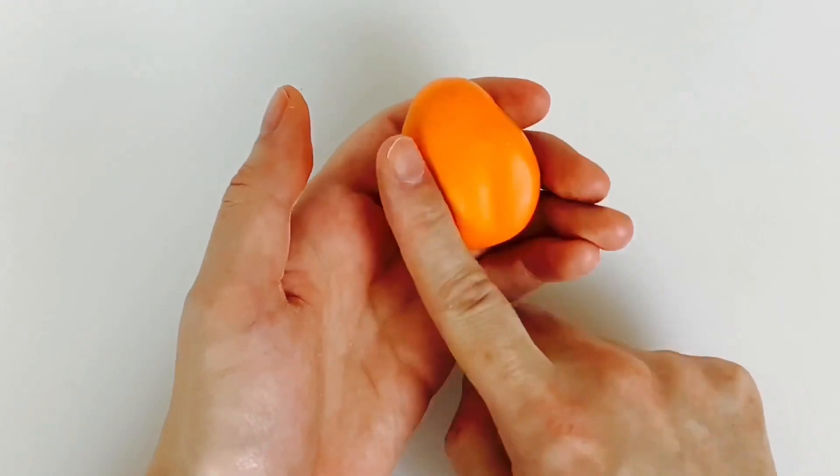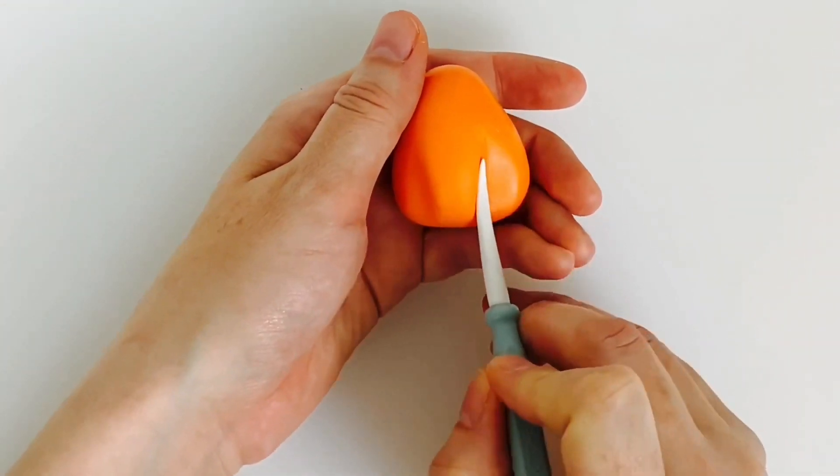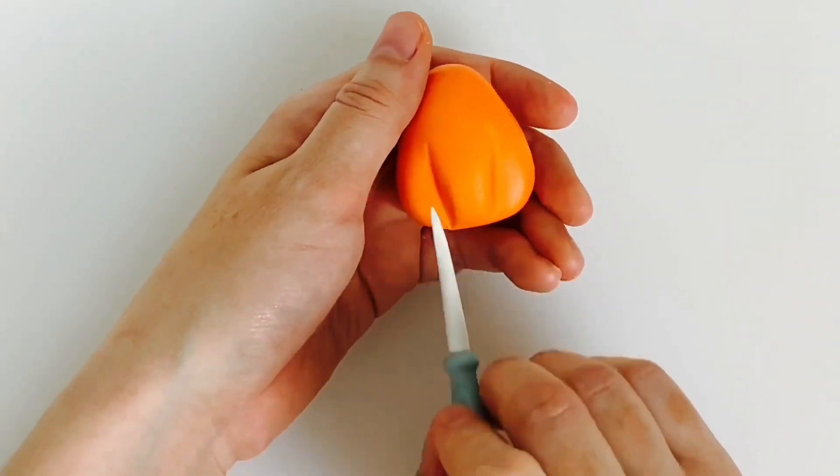Take 30 grams of orange modeling paste and shape into an egg. Use your fingers to indent the paste and then use the Dresden tool to enhance.